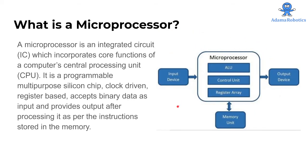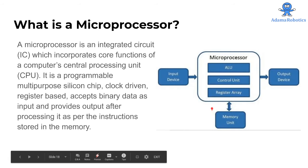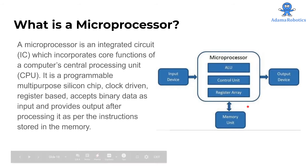In the diagram here, as you can see, we have input devices. They take the data inside the system, into the microprocessor, where we have ALU — arithmetic logic unit — control unit, register array. And we have the memory unit, where the data is being saved.